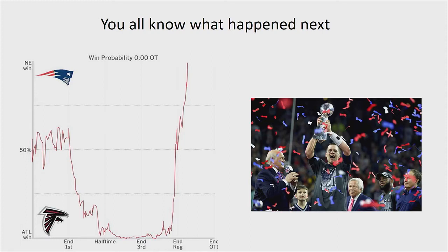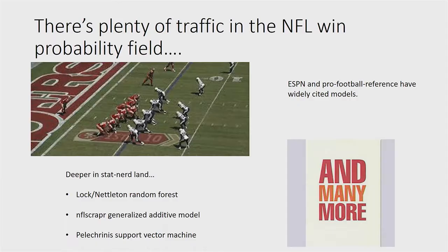The Patriots came all the way back to tie it in regulation and then won in overtime. In the wake of this remarkable event, the win probability graphs went viral on the Internet because they went from the very bottom to the very top in a very small amount of time. This led to lots of debate online about just how improbable or unlikely this really was. Was this the most impossible thing we'd ever seen, or was it merely very unlikely? Clearly, betting against Tom Brady in the fourth quarter has generally been a mistake.